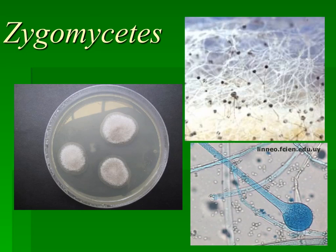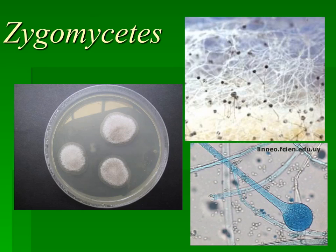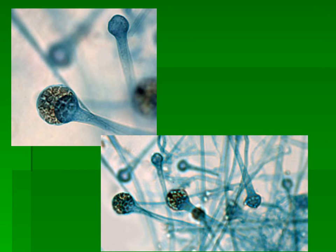Here we have zygomycetes, which would be typical bread mold. The individual strands are called hyphae, and the visible mat is mycelium. Think of it as a bath mat — the individual yarn strands are the hyphae, and the bath mat as a whole is the mycelium. We can also see the individual spores and the sporangia spore on a typical hyphae.